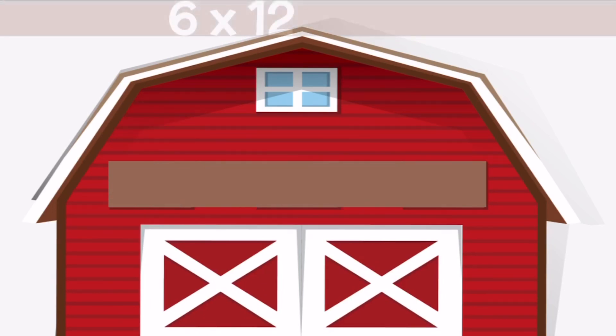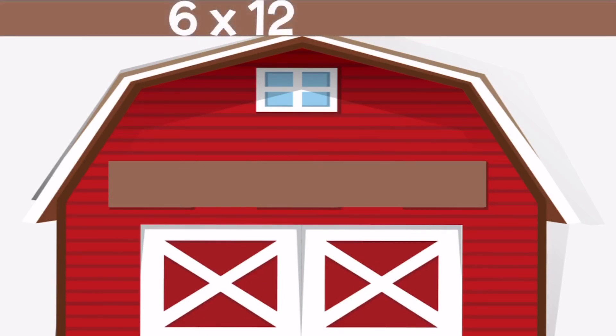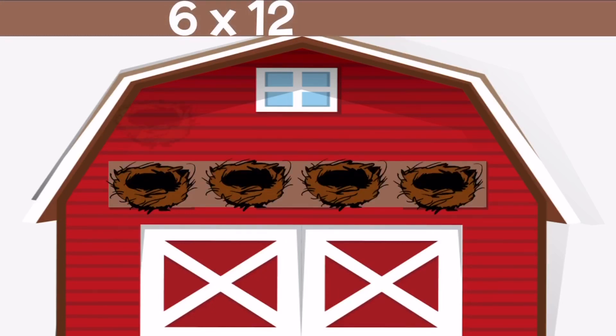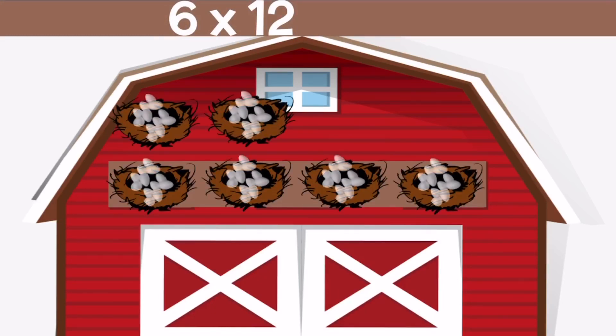6 times 12 — we need six nests with 12 eggs in each nest. If we count up all of our eggs, our answer is 72.